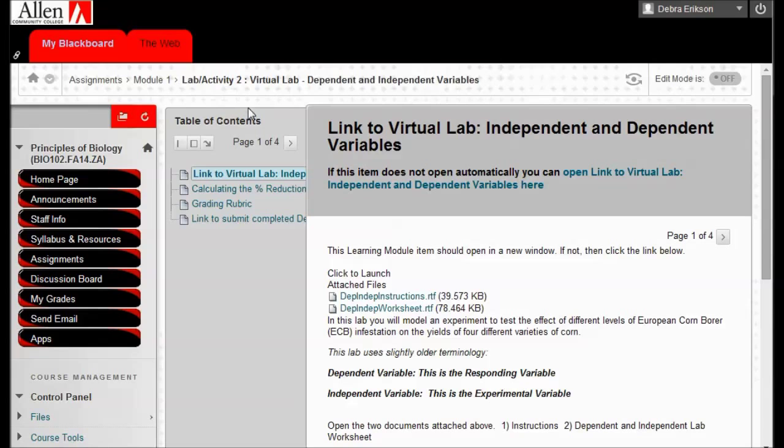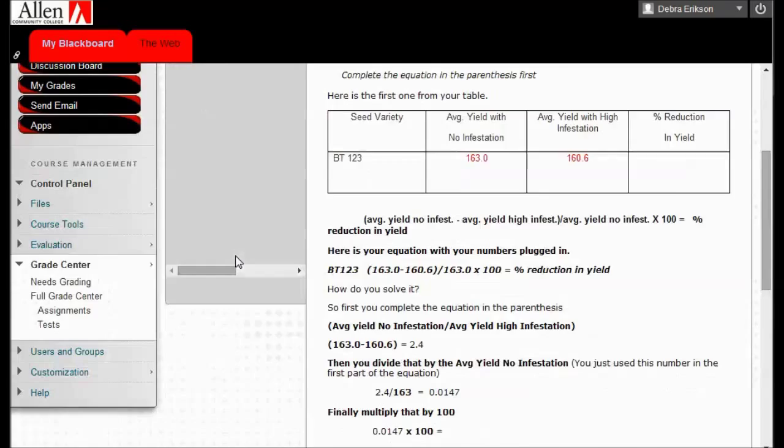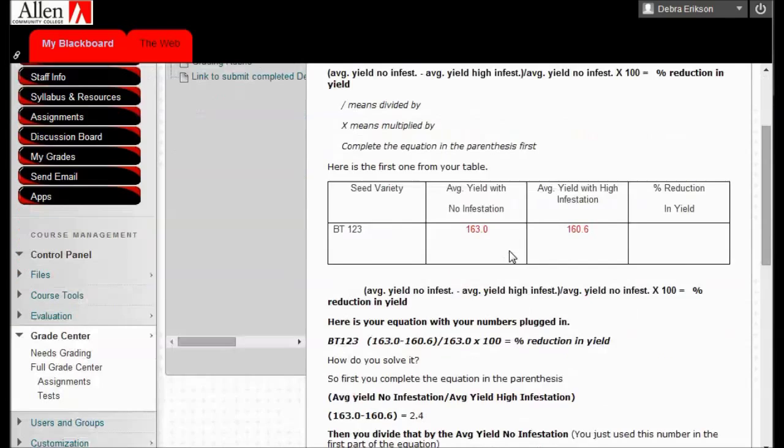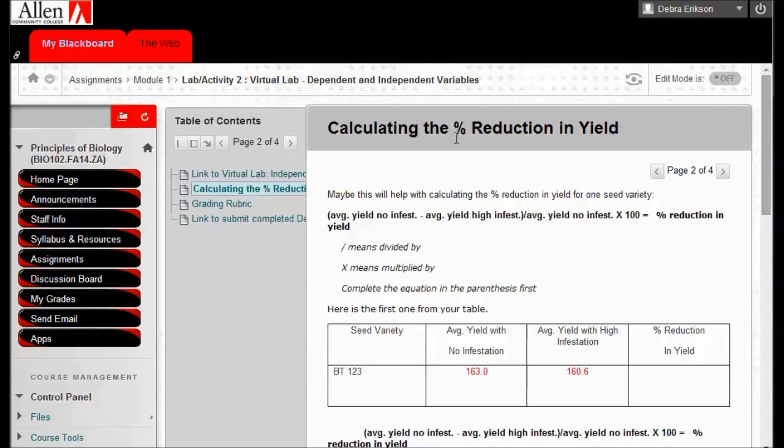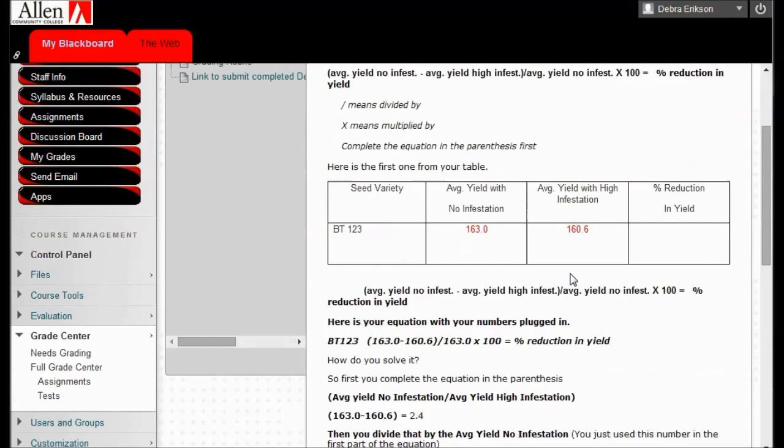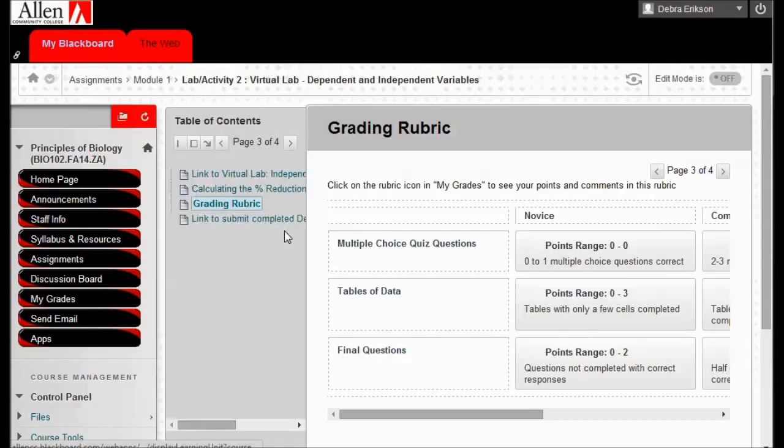Here is how to calculate that percent reduction in yield. It seems kind of complex, but it's really not and I'll walk you through this when we get there. Here's the grading rubric. Everything I put in here has a grading rubric. My screen's a little small so you can't see it all, but you'll see how that goes.